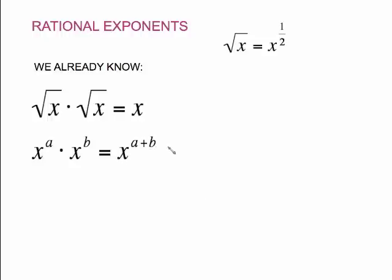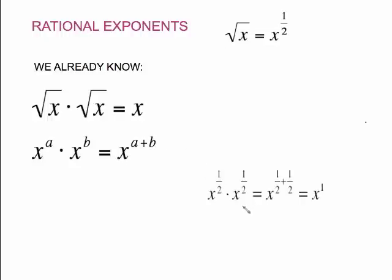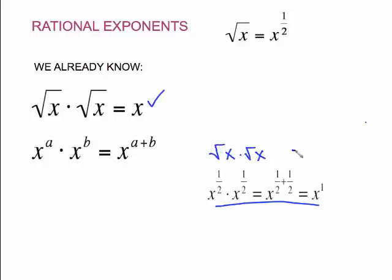Putting those two things together: if we do x to the 1/2 times x to the 1/2, we keep the base and add the exponents — 1/2 plus 1/2 equals 1. This is analogous to the square root of x times the square root of x equaling x. That's the reason the square root of x equals x to the 1/2.